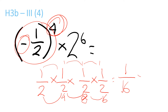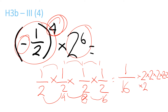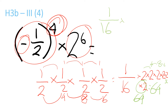Still, you've got to times it by this one, which would be 2 times 2 times 2 times 2 times 2 times 2, which equals: 2 times 2 is 4, 4 times 2 is 8, 8 times 2 is 16, 16 times 2 is 32, and then 32 times 2 is 64. So, 64. Now, you've got to do 1 over 16 times 64, so that's the same as 64 over 16, and 16 goes into 64, 4 times. So you have your answer: 4.